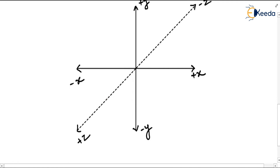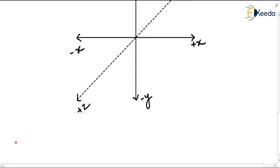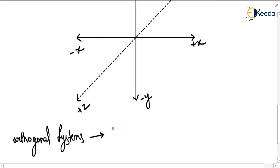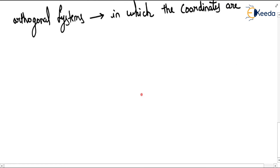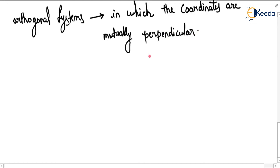These are called orthogonal systems. Orthogonal systems are systems in which the coordinates are mutually perpendicular to each other.